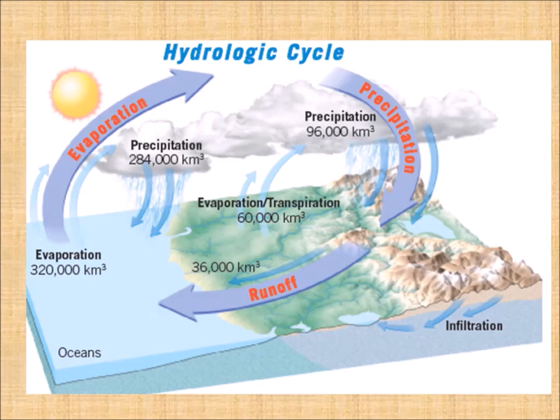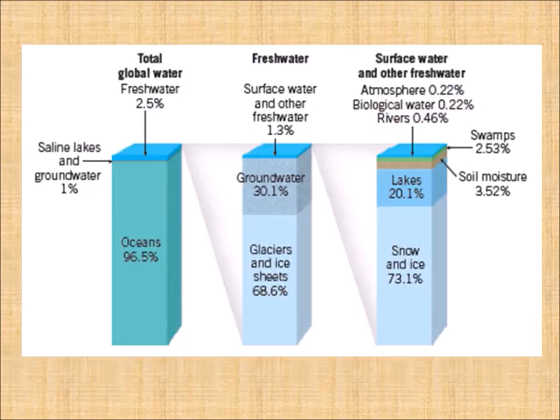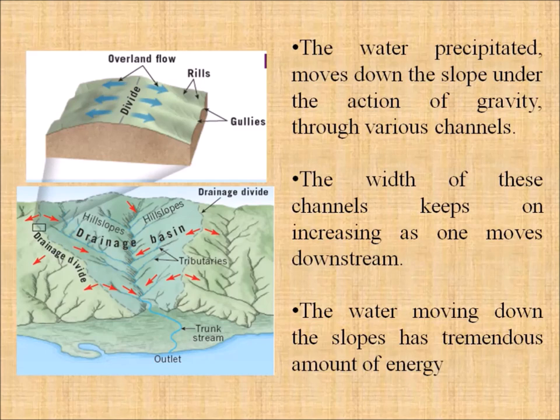Around 2.15% of water is stored in glaciers and ice sheets, and only 0.65% of the entire water budget — part of the atmosphere, rivers, and lakes — is fresh water. That small fraction sustains almost all life on earth, whether plants or animals. This illustrates the distribution of water across different segments.